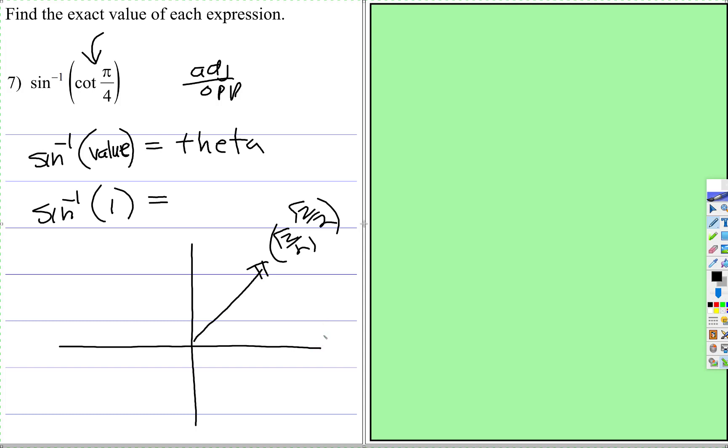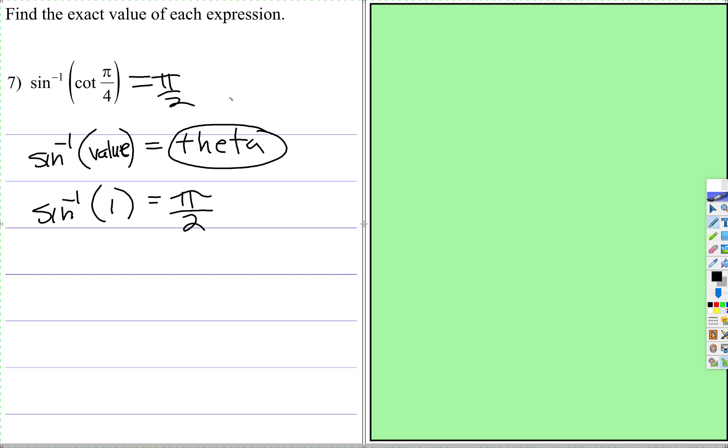If we look at the unit circle, cosine is 1 there. Sine is 1 right up there at π/2. So the inverse sine of 1, because remember we're looking for the theta, sine is the height of 1 at π/2. So right up here you would just put π/2.